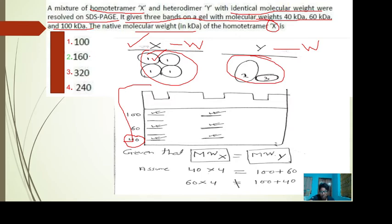We can consider 40 kDa as the subunit of X, giving a tetramer of 160 kDa. If one subunit is 60, then four will be 240. If we consider 100 as one subunit of X, the molecular weight should be 400. But 400 is not an expected answer, so we can eliminate those options.